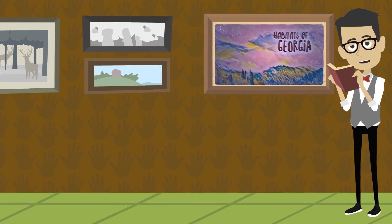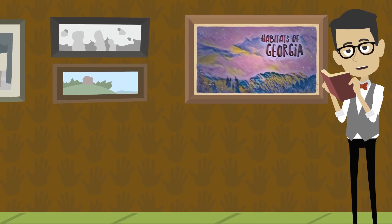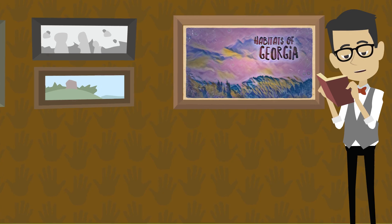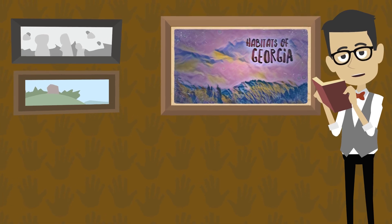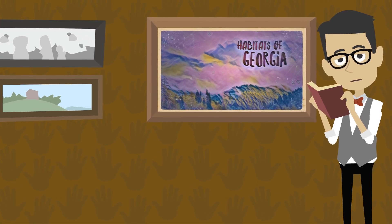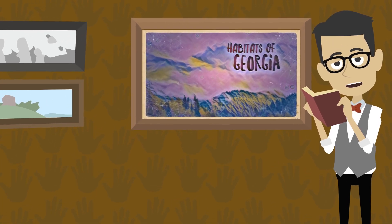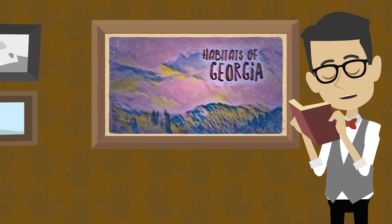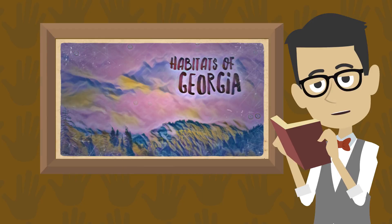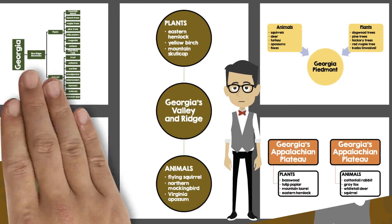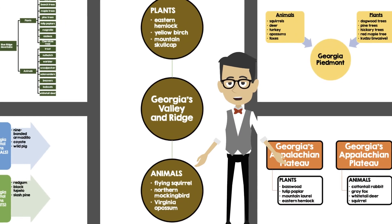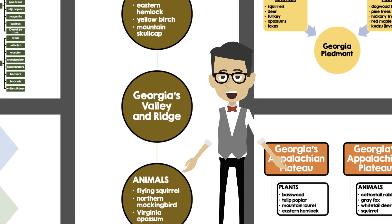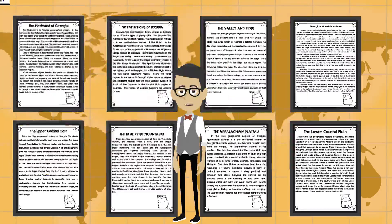Welcome to today's show. On today's show, we're going to discuss the five geographical regions of the state of Georgia and the plant and animal habitats that lie within. The state of Georgia has five regions, and every region has a different type of geography.